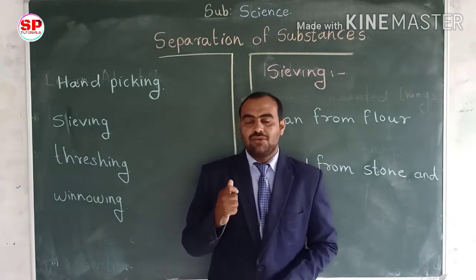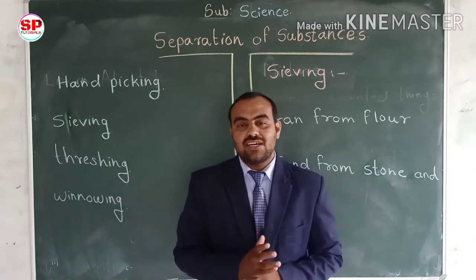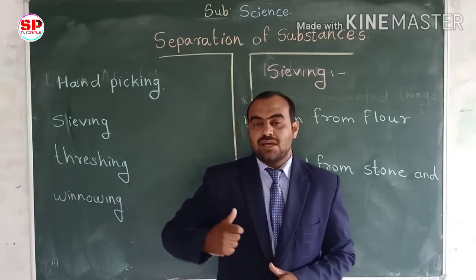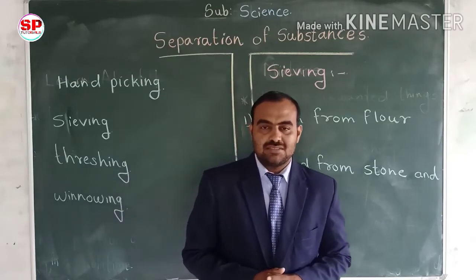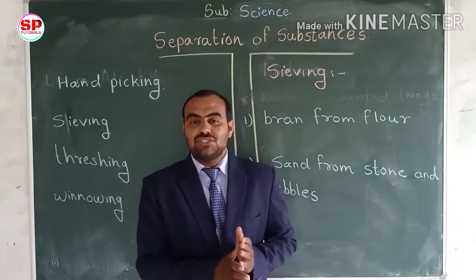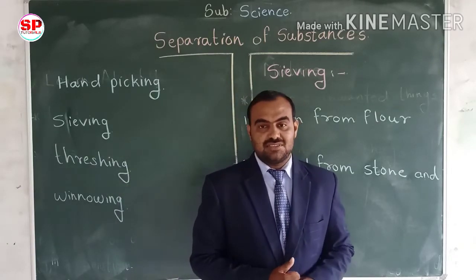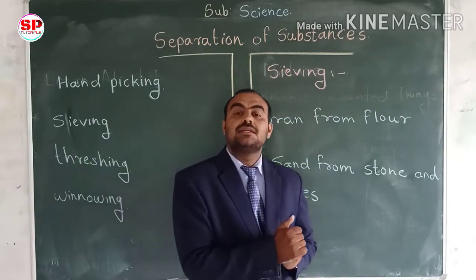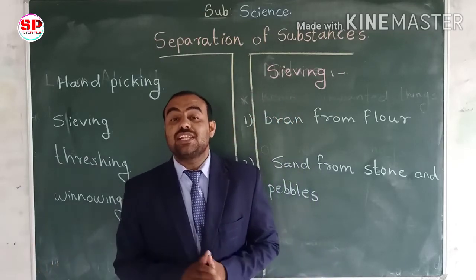In the last video, we discussed about what is a mixture and the various methods of separation of mixtures. We discussed about the hand-picking method — it is one type of method by which we remove impurities from the pure substance, like stones are removed from food grains.